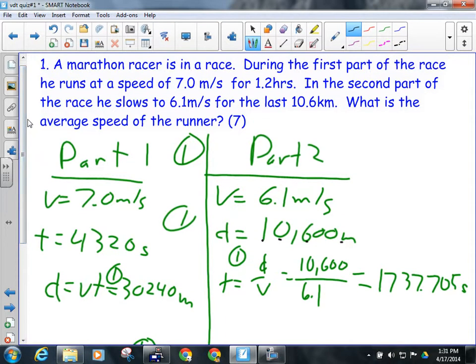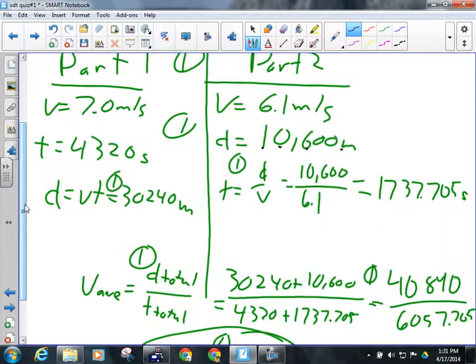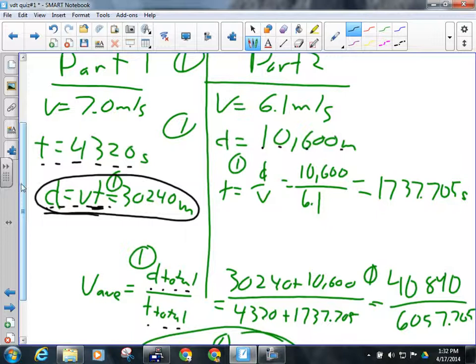So for part one, we know that it moves at seven meters per second and it does so for 1.2 hours. So we have to convert the hours into seconds by multiplying by 3,600. So there's our time for part one. We need to find the distance for part one or we can't do d total over t total. So we manipulate v equals d over t by multiplying both sides by t, so d equals v times t. 4,320 times 7. So give them a mark if they've got this step.